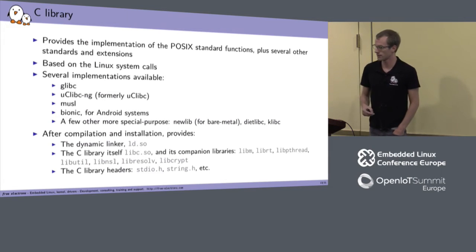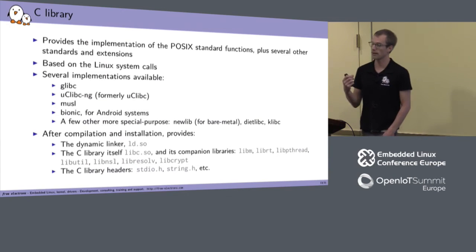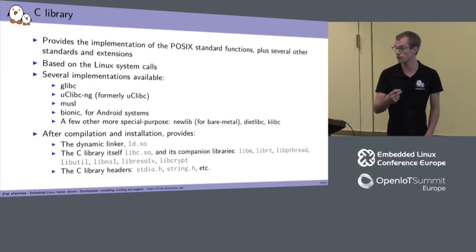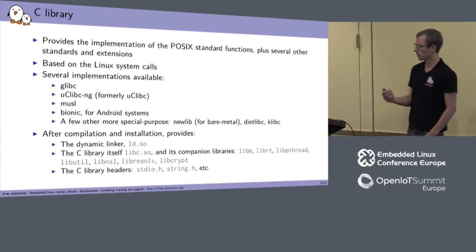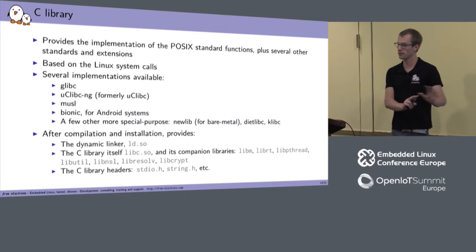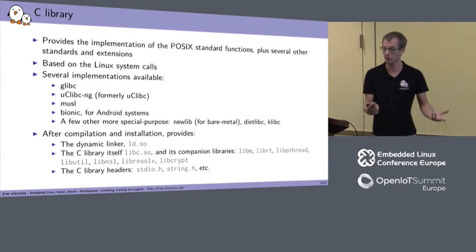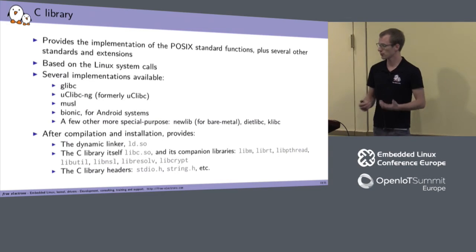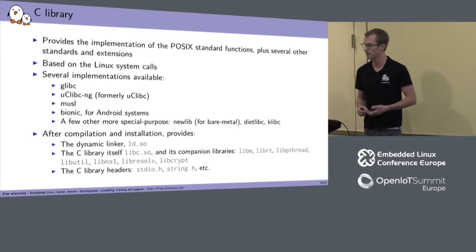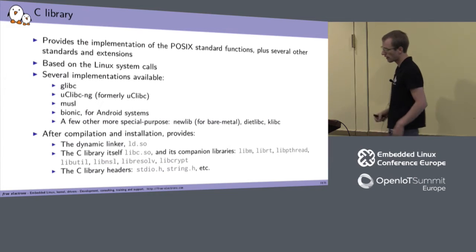Each C library provides a dynamic linker — the program triggered when you run a dynamically linked application, responsible for mapping shared libraries into memory. Of course, for statically linked applications no dynamic linker is involved. The C library also provides libc.so itself and companion libraries: libm, librt, libpthread, and others providing other parts of the POSIX standard. It also provides standard C library headers: stdio.h, string.h, stdlib.h, and so on.